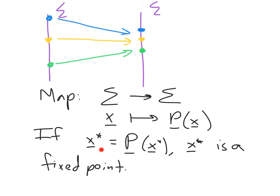If we happen to have a point that maps to itself, that point is a fixed point of the map and it's a limit cycle of the original flow.